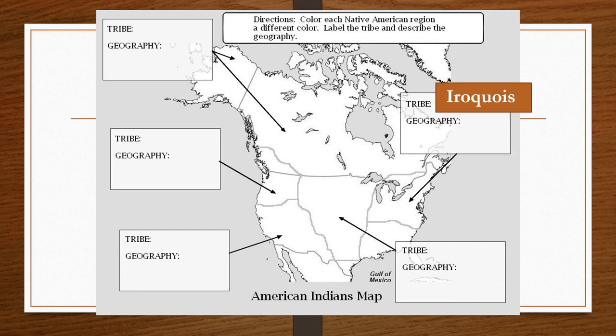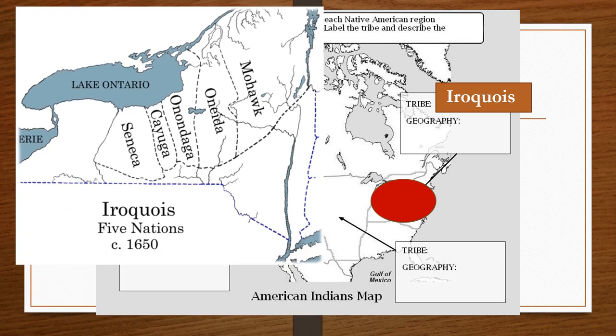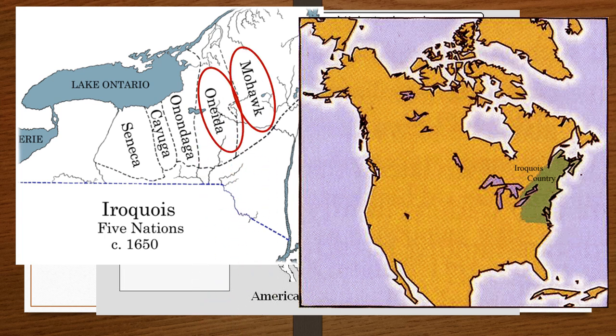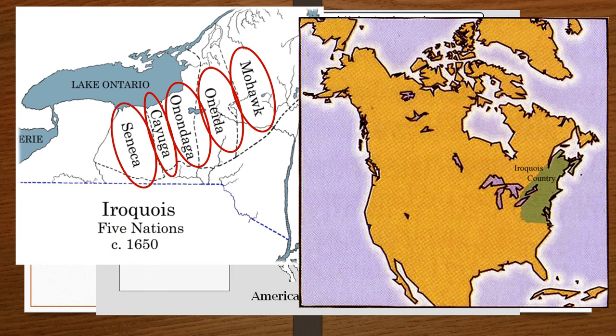Let's start with the Iroquois tribe in the northeast part of North America. You can color this region red. The Iroquois originally lived near Lake Ontario and along the Mohawk River in New York State. Around 1600, five tribes — the Mohawks, the Oneidas, the Onondagas, the Cayugas, and the Senecas — banded together to form a confederacy.